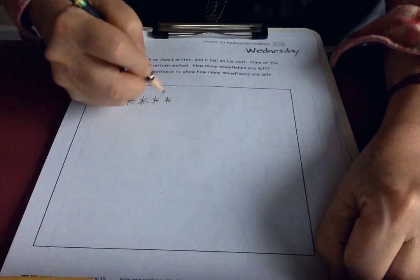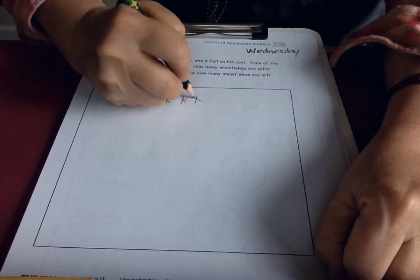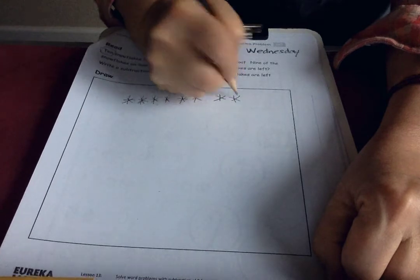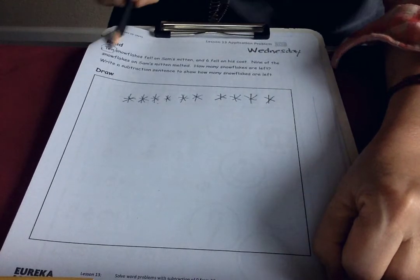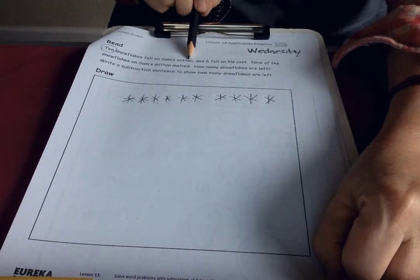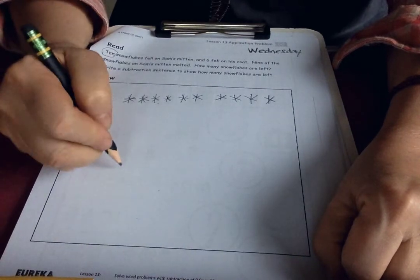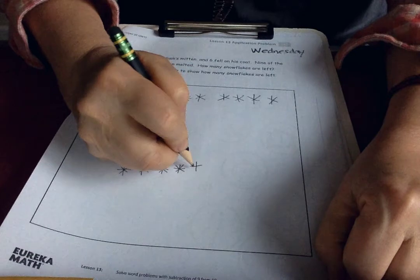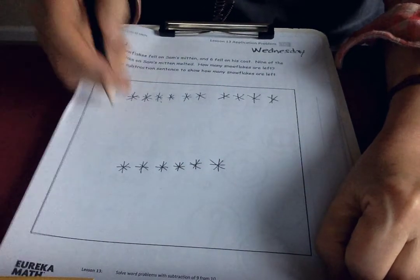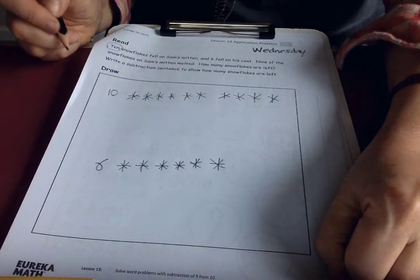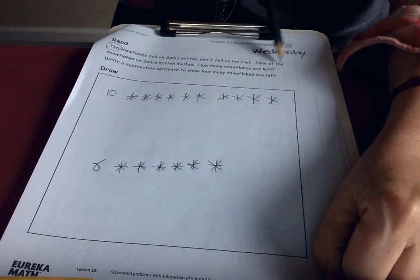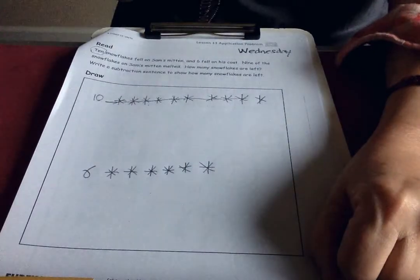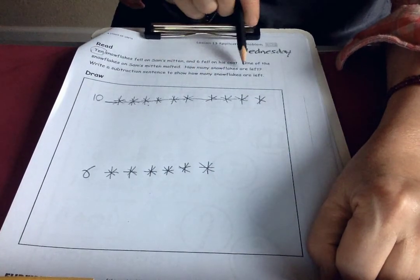One, two, three, four, five. You know, this isn't a great snowflake. You know why? There's six sides to a snowflake. One, two, three, four, five, six, seven, eight, nine, ten. So ten snowflakes fell on Sam's mitten. And six fell on his coat. Let's do his coat down here. One, two, three, four, five, six. Do you see how many snowflakes we have? We have ten and six. I think you can add that in your head. But let's find out what they want to know. Nine of the snowflakes on Sam's mitten melted. Oh that means I have to get rid of nine of the ten. So I'm just going to put a line through it. Nine melted. How many snowflakes are left? There we go.